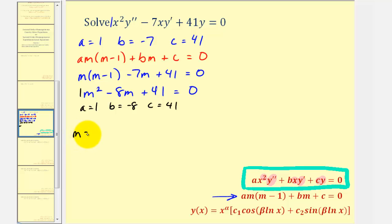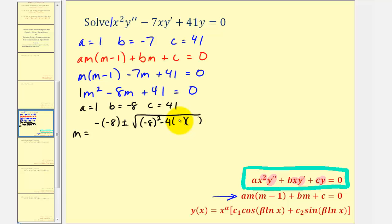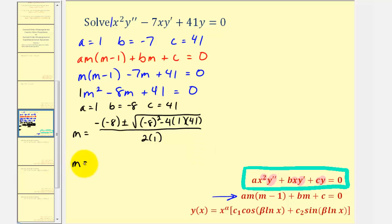So we have m equals negative negative eight, plus or minus the square root of b squared — that is negative eight squared — minus four times a times c, where a is one and c is forty-one, all divided by two times a, or two times one. Simplifying, we get m equals eight plus or minus the square root of sixty-four minus one hundred sixty-four, which is negative one hundred, divided by two.